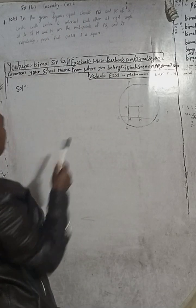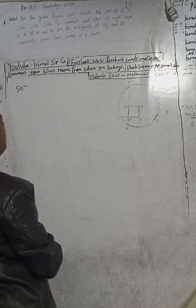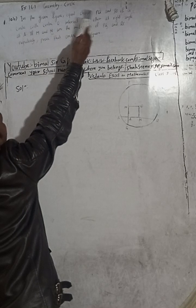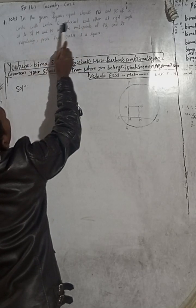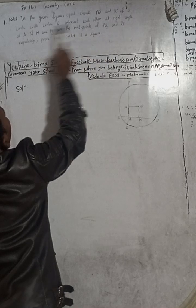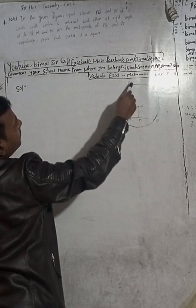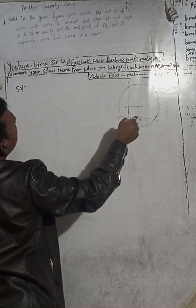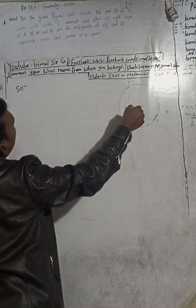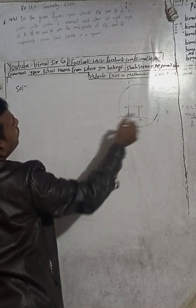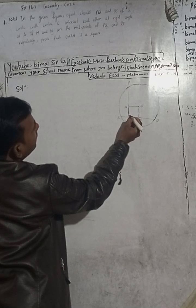Don't forget to check the playlist — you'll get a lot of solutions there. Now the question: in the given figure, equal chords PQ and RS of a circle with center O intercept each other at right angles at point A. So these two equal chords PQ and RS intersect each other at 90 degrees.